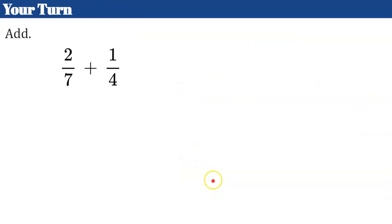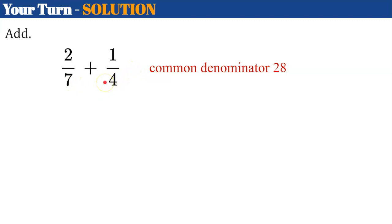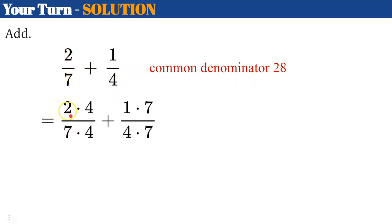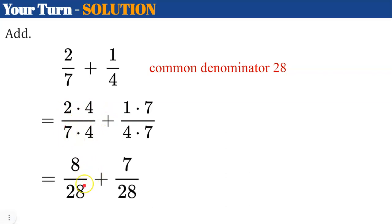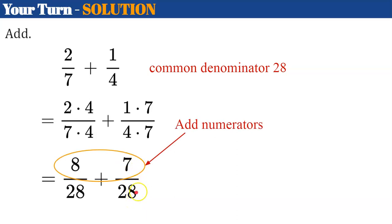Now this one's your turn. I would like you to pause the video, add the fractions, and come back when you're ready to check your work. Welcome back. The first thing I hope you did was find a common denominator of 28. Seven and four do not have any factors in common, so the least common denominator is 28. Two-sevenths: multiply the denominator by four to get 28, and also multiply the numerator by four. For the second fraction, multiply four by seven to get 28, and also multiply the numerator by seven. Two times four is eight over 28, one times seven is seven over 28. Eight plus seven is 15 over 28. This is in simplest form because 15 and 28 do not have any common factors.